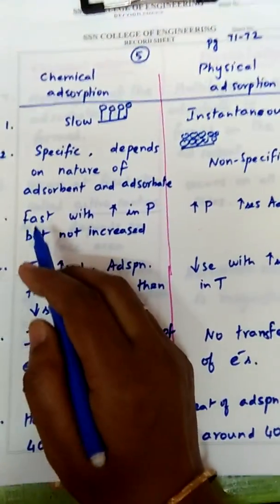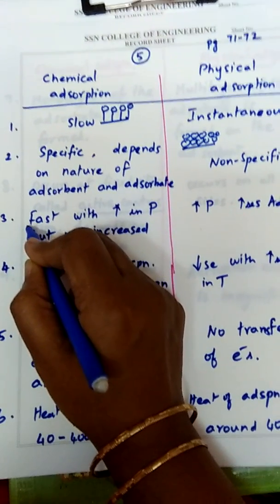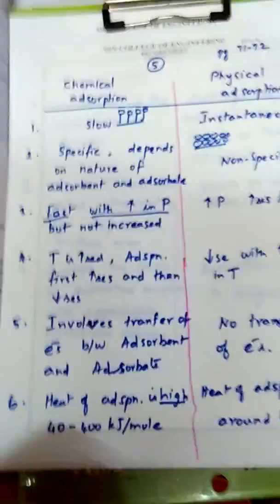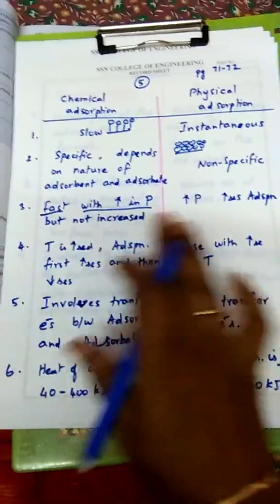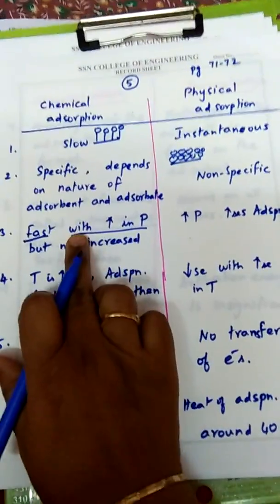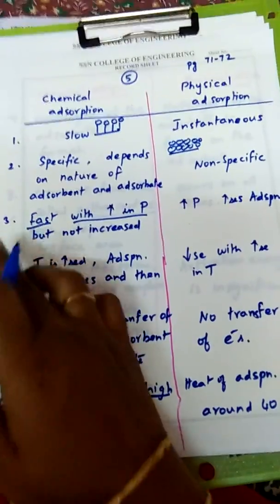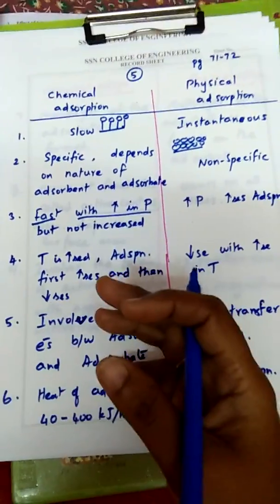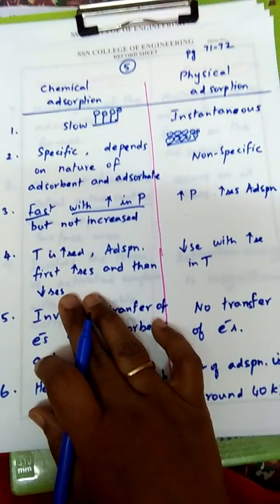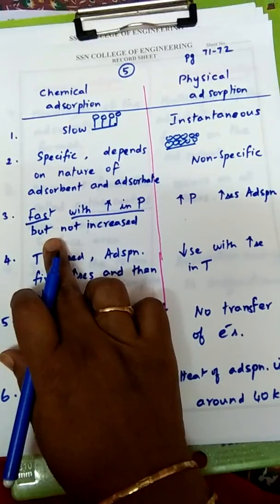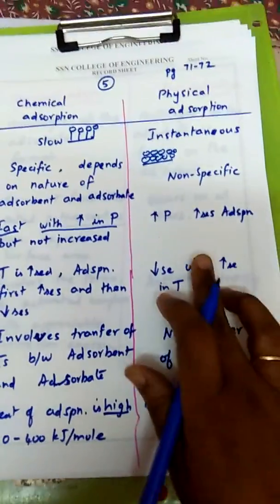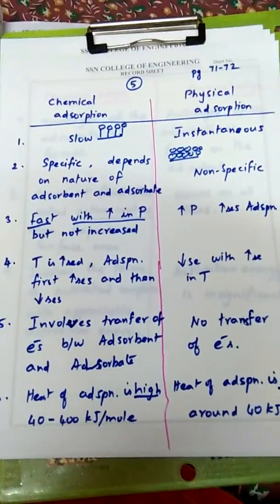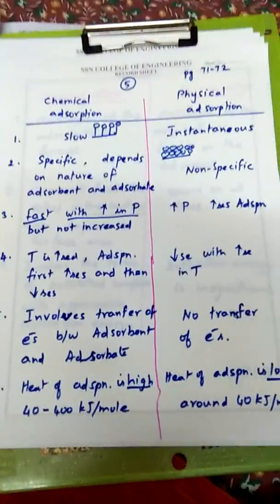The third point is the effect of pressure. In chemical adsorption, increasing pressure makes the adsorption faster — the rate increases — but it does not increase the quantity adsorbed. It is not that previously 10 molecules were adsorbed and now 100 are adsorbed; rather, the rate of chemical adsorption increases. Whereas in physical adsorption, increase in pressure actually increases the amount of adsorption — for example, from 100 molecules to 500 molecules adsorbed.